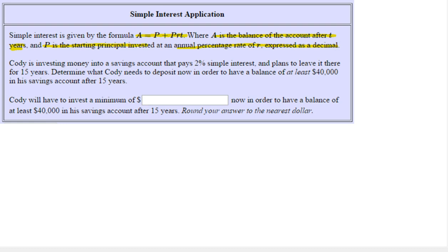Okay, so that's telling us what formula we use. And now here's specific information. Cody is investing money into a savings account that pays 2% simple interest and plans to leave it there for 15 years. Now I see determined, so I'm going to get the green pen to highlight my goal. Determine what Cody needs to deposit now. So that's what we're looking for, which would be the initial starting principal.